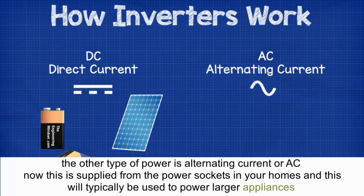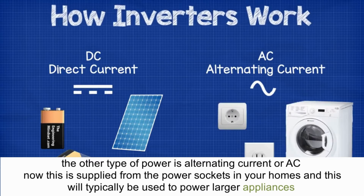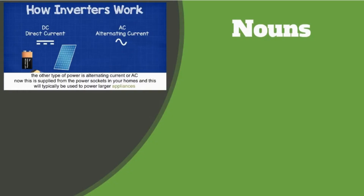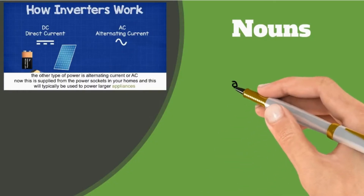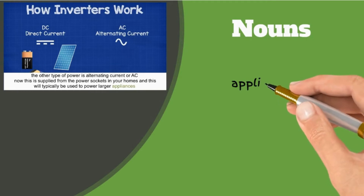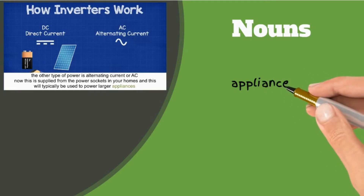The other type of power is alternating current, or AC. Now this is supplied from the power sockets in your homes and this will typically be used to power larger appliances. Appliance: a household machine.